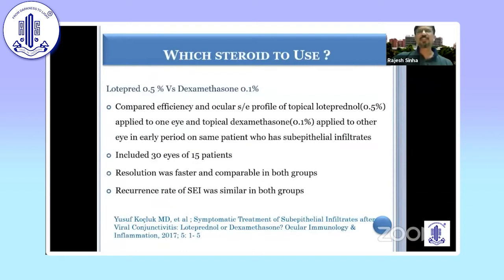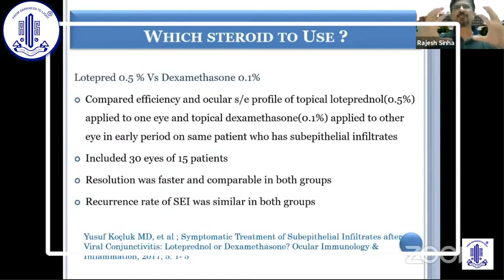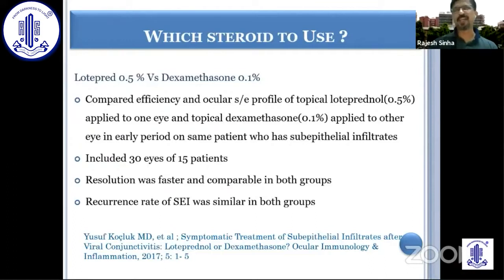Regarding steroid selection, studies have shown loteprednol and dexamethasone to be equally effective. I would use loteprednol or fluorometholone in most cases, except in very severe cases with confluent sub-epithelial infiltrates significantly obstructing visual acuity, where I would give a short burst of a potent steroid like dexamethasone for four to five days, then move to loteprednol alongside cyclosporin, and then taper off the loteprednol.